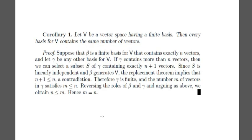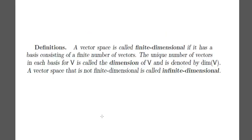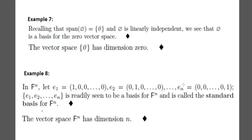Since every basis for any vector space contains the same number of vectors, this number is called the dimension. A vector space V is called finite dimensional if it has a basis consisting of a finite number of vectors. The unique number of vectors in each basis for V is called the dimension of V, denoted dim(V). A vector space that is not finite dimensional is called infinite dimensional.